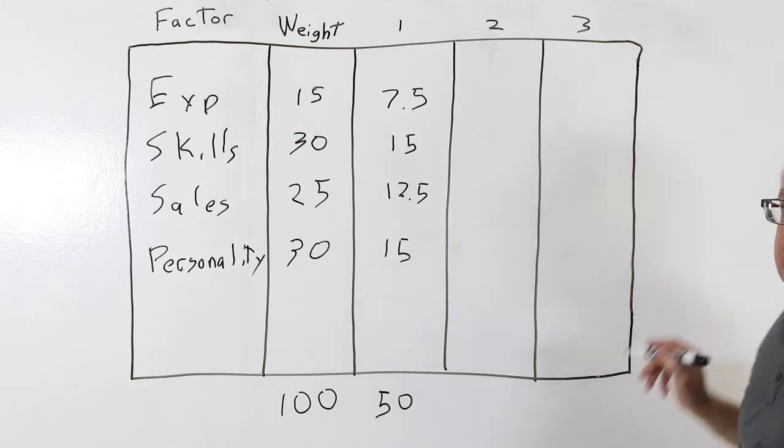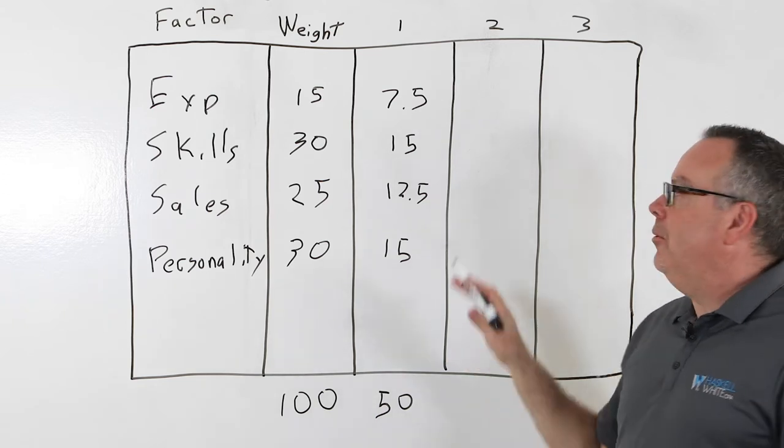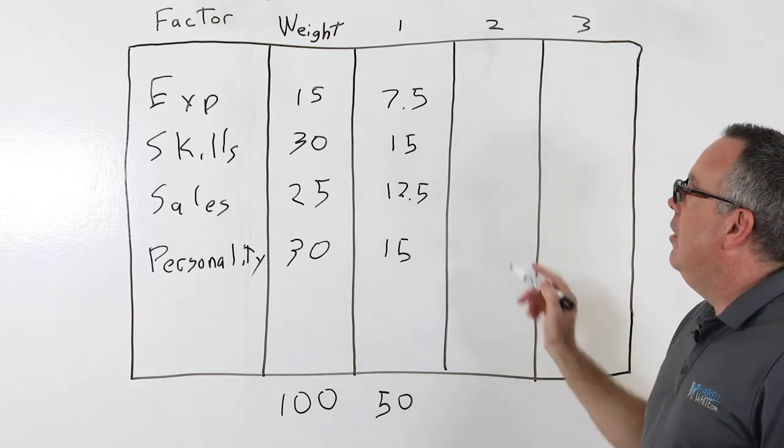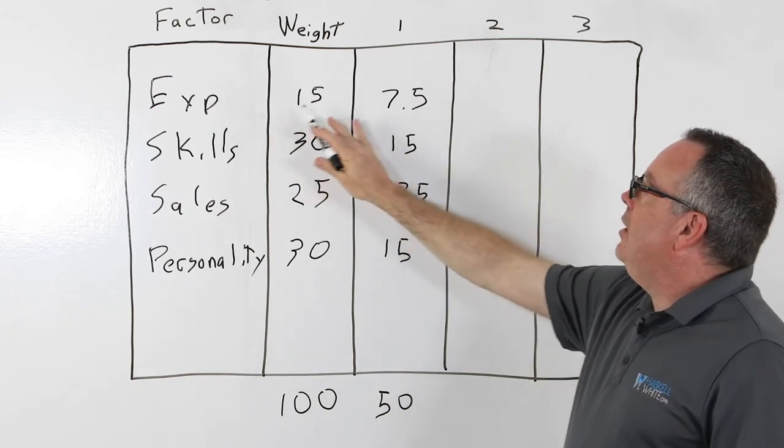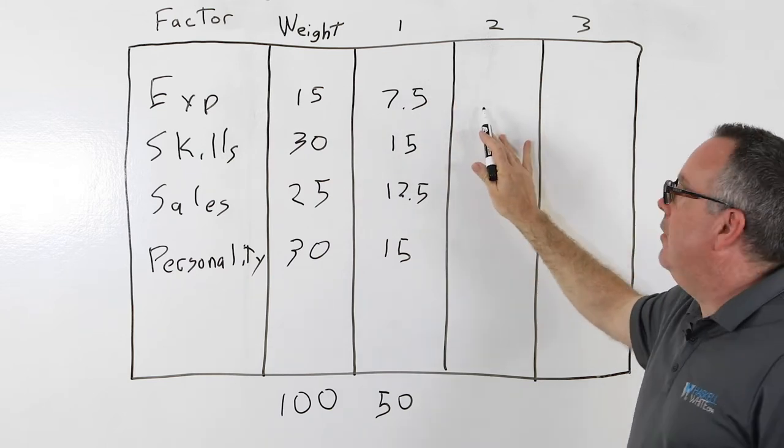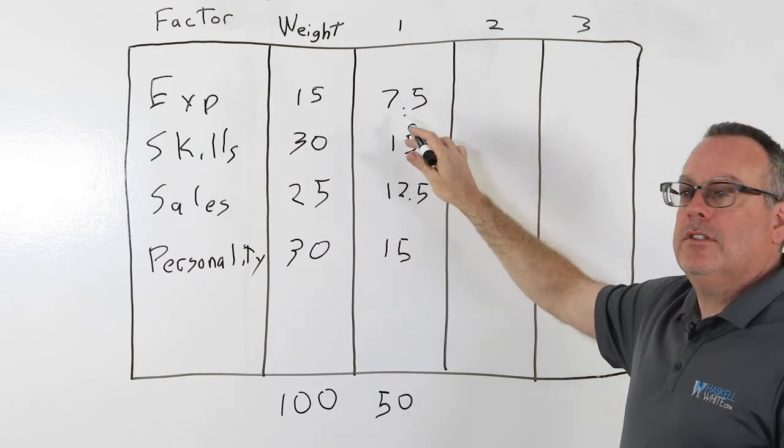You could have six or seven, but for the demonstration purposes here we'll just look at two other candidates. So what we want to do is for each candidate, candidate two and three, look at their experience and how they rate against the first candidate.